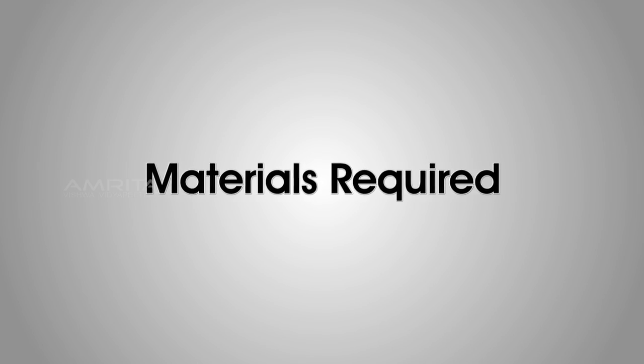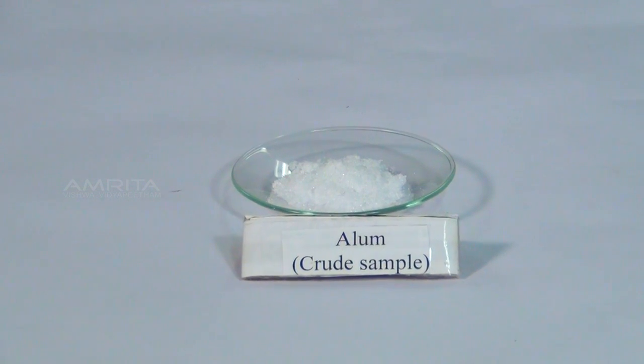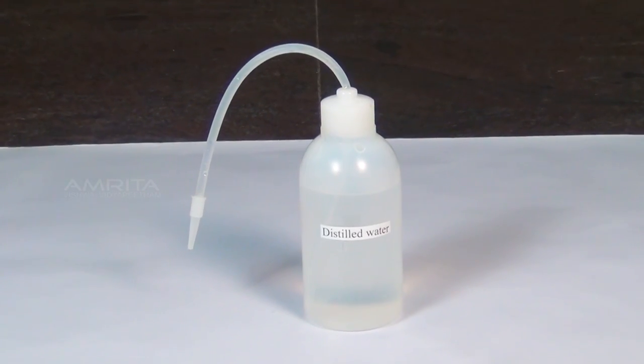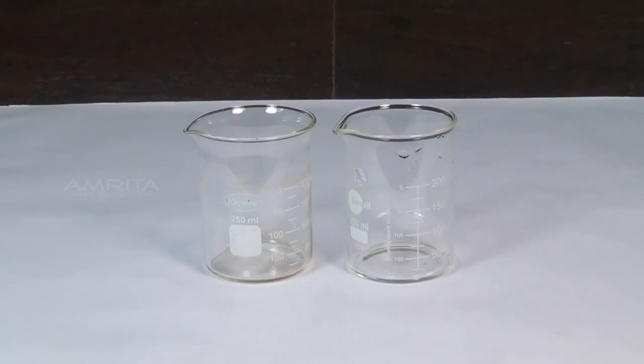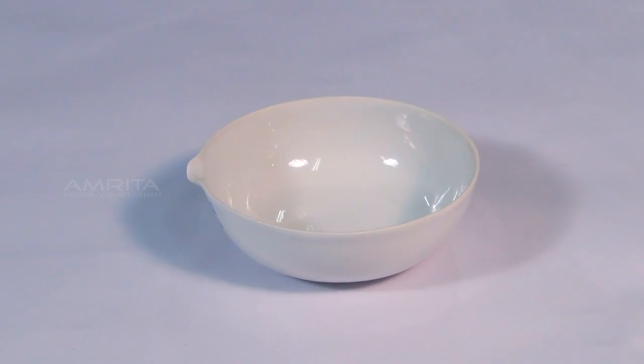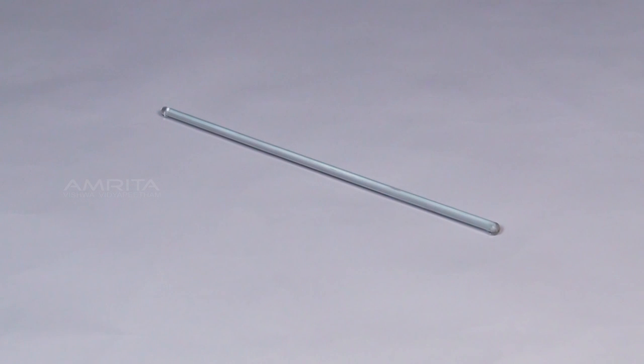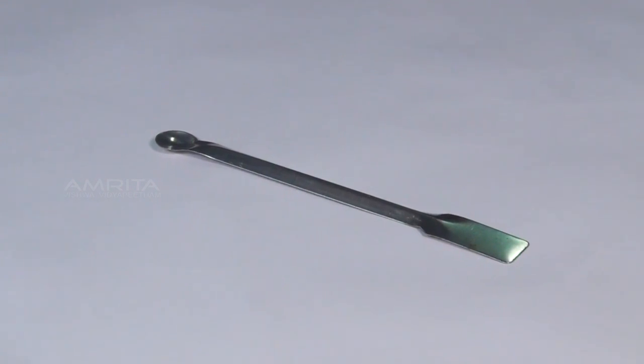Materials Required: Crude sample of Potash Alum, distilled water, ethyl alcohol water mixture, 250 ml beakers, china dish, glass rod, spatula, funnel,